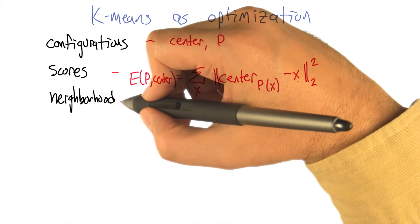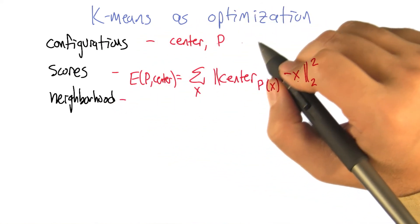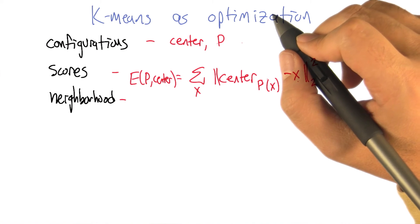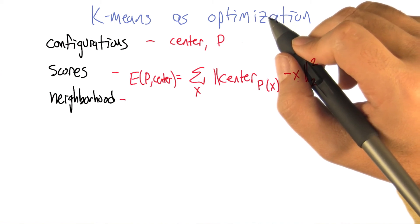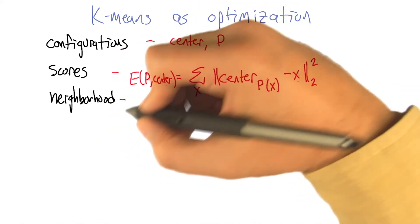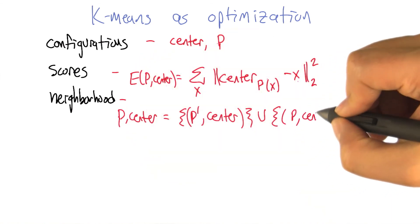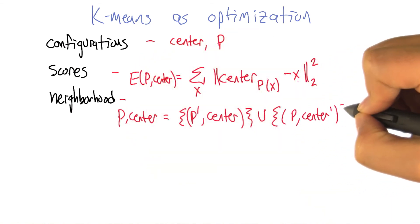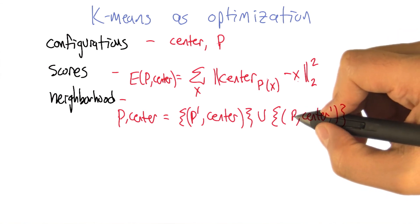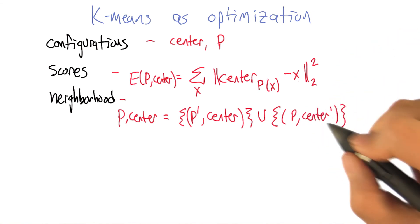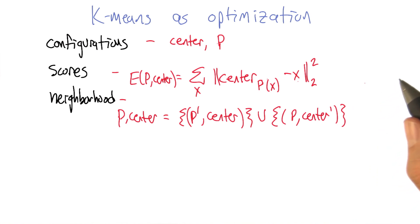Yeah. And I'm not sure exactly how we're going to define neighborhood, but one way to define neighborhood is that the neighborhood of a configuration, which is a P and a center, is the set of pairs where you keep the centers the same and you change the partitions, or you keep the partitions the same and you move the centers. So you're basically changing one of these at a time. Oh, that's very clever, Michael.